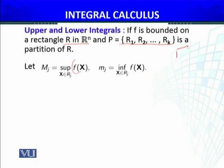M_j is the supremum — the maximum value — of F(x) over each sub-rectangle R_j. There are infinitely many points; corresponding to each point x in R_j we evaluate F(x). The supremum of F(x) over R_j gives one value, which we call capital M_j.